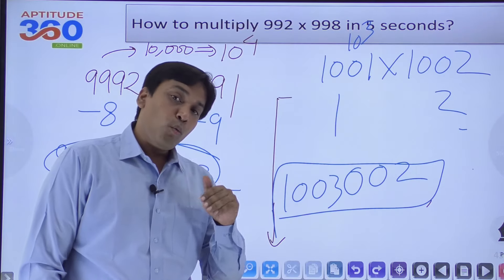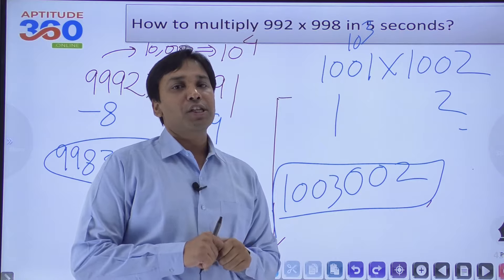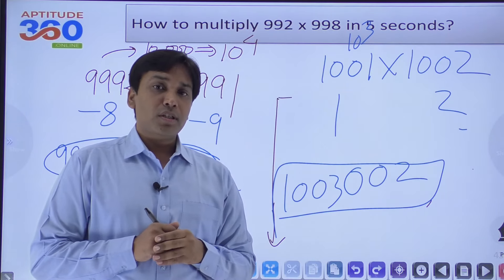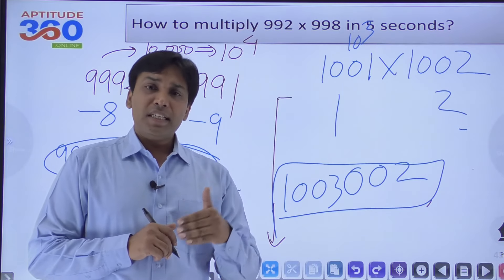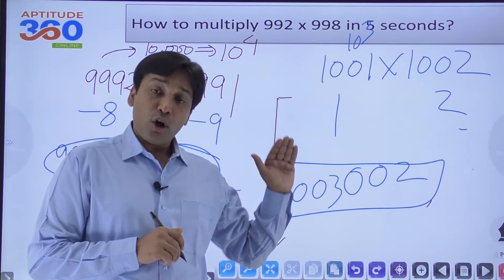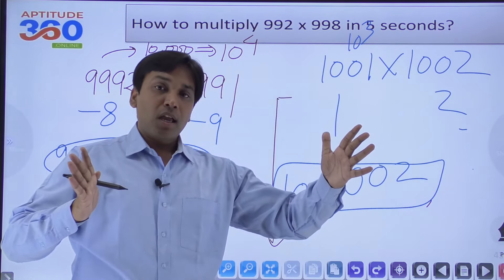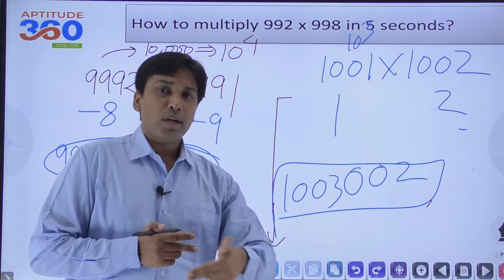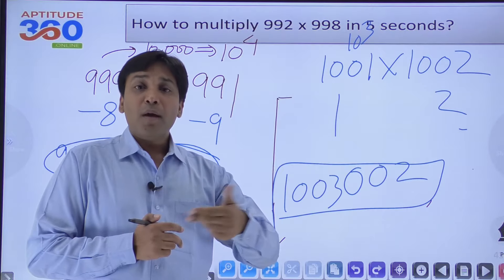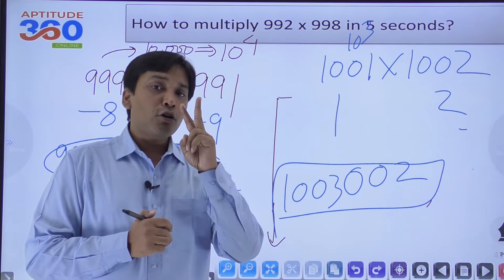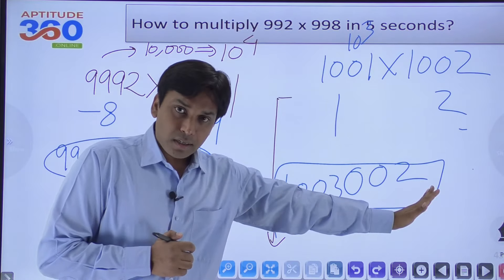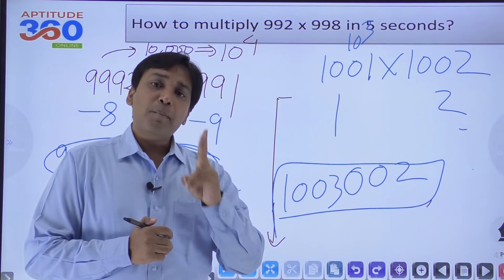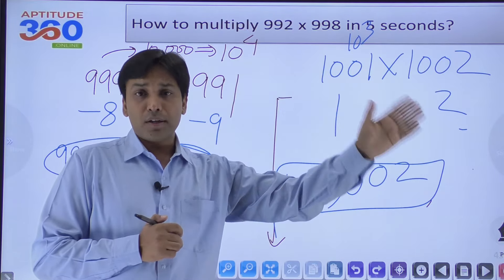But you have to understand where to use it and what its limitations are. The Nikhilam method has two limitations: number one, the numbers must be close to each other; and number two, both numbers must be close to a base that is a power of 10 — 10, 100, 1000, 10000, and so on. If the numbers are scattered, like 89×73 or 89×35, this formula won't be helpful.